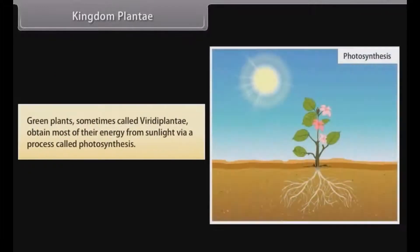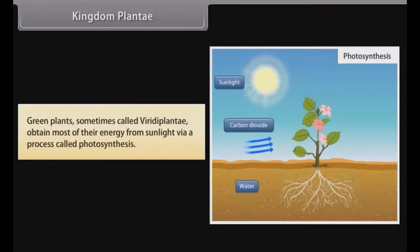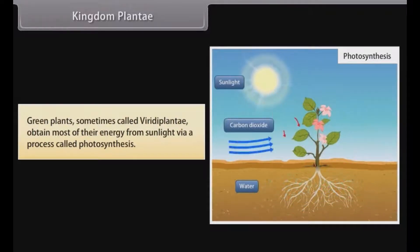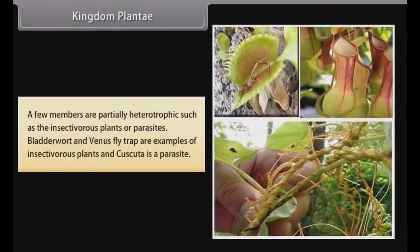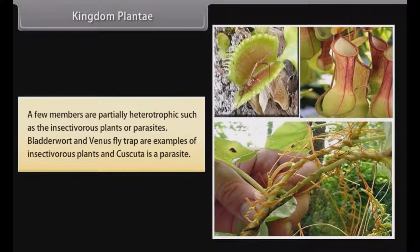Green plants, sometimes called Viridiplantae, obtain most of their energy from sunlight via a process called photosynthesis. A few members are partially heterotrophic, such as the insectivorous plants or parasites. Bladderwort and Venus flytrap are examples of insectivorous plants, and Cuscuta is a parasite.